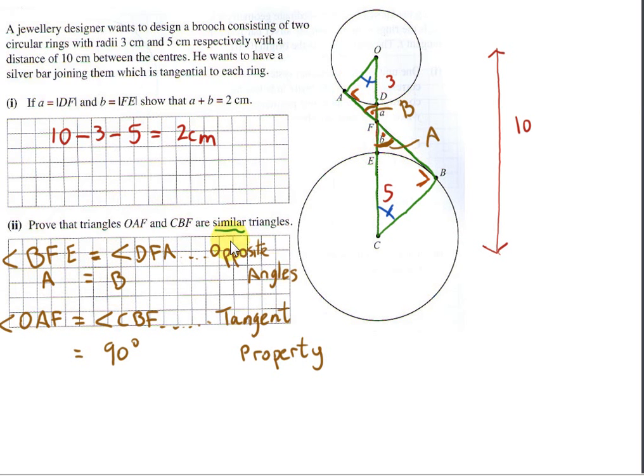So A equals B because they're opposite angles. Now we have that OAF is 90 degrees. You can call this C. And CBF, CBF is the other right angle. You can call it D. State that they're both equal to 90 degrees. Why? Because it's a property of tangents.